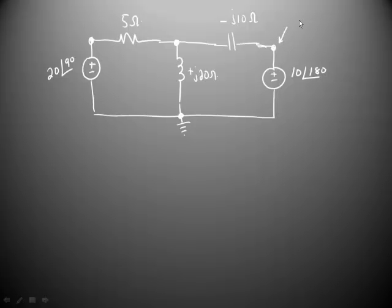We know the voltage at this node. It's 10 at angle 180. We know the voltage at this node. It's 20 at angle 90. We know the voltage at the reference node. It's by definition zero volts, which leaves us one voltage node that we have to deal with.